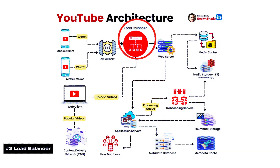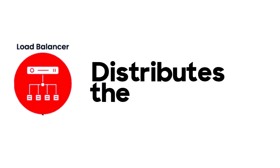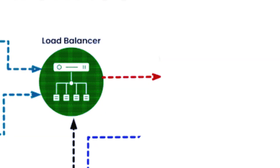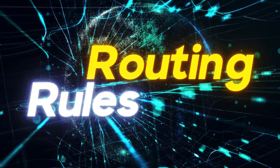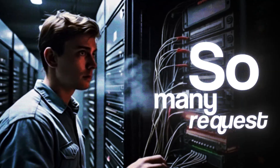Now, with billions of videos and billions of users, when we upload a request, which server does it go to? YouTube has so many servers — who decides which request goes to which server? That's where the second component comes in: the load balancer. A load balancer distributes the load and behaves like a traffic cop, making sure requests are evenly distributed with no single point of failure. It has routing rules at the backend to handle so many requests across so many services.